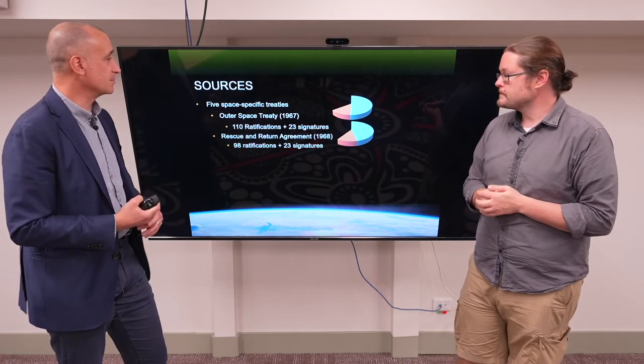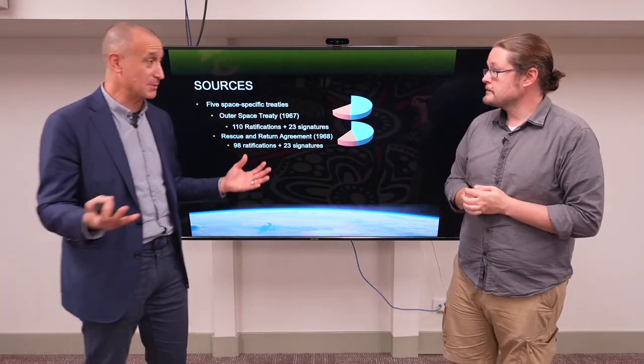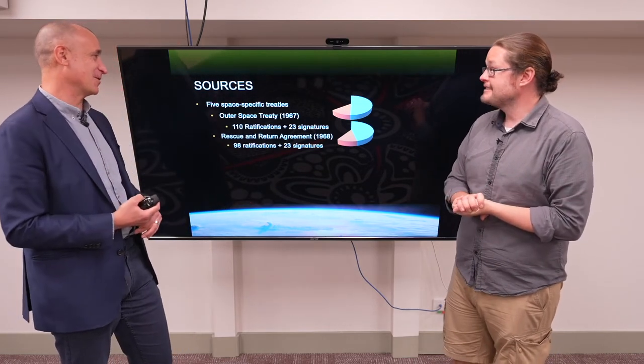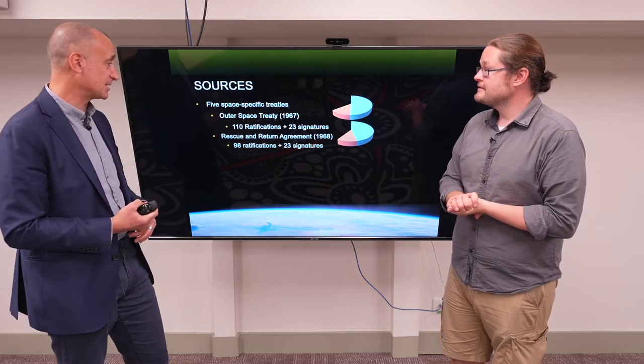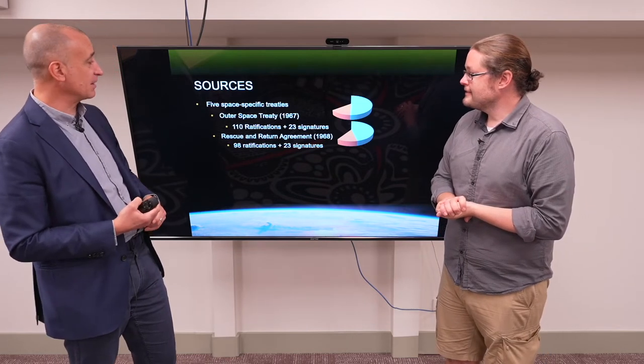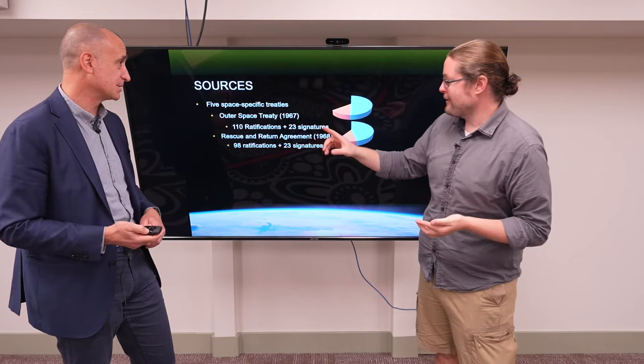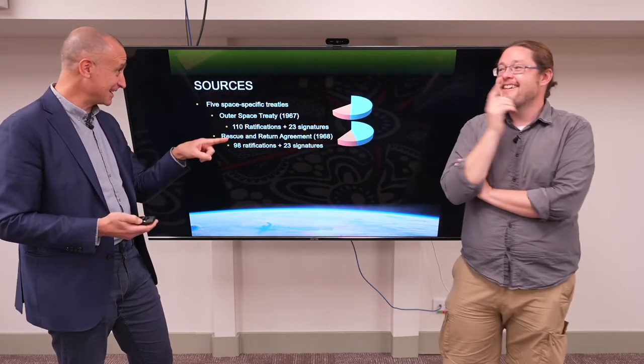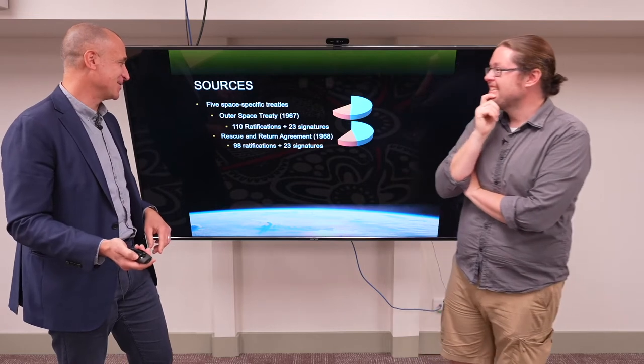Then you have the rescue and return agreement. The name of the rescue and return agreement is fairly indicative of what it covers. Fair enough. Rescue and return of astronauts and space objects. That has a few less ratifications. Is there any reason why there's less here? Okay. We'll come to that. All right. Come to that. You'll see a pattern.